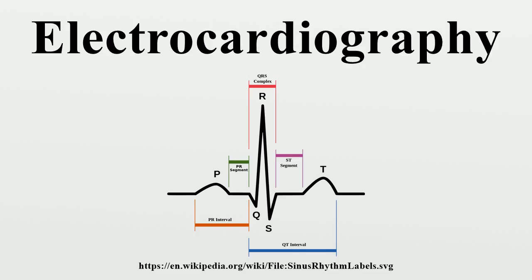The heart rate can be approximated quickly by dividing 300 by the number of large boxes between two consecutive QRS complexes on the EKG paper.